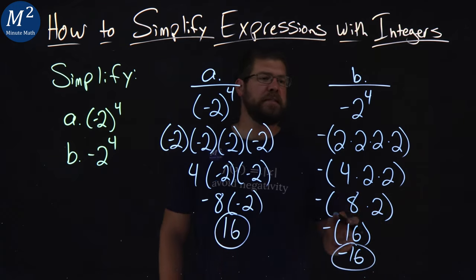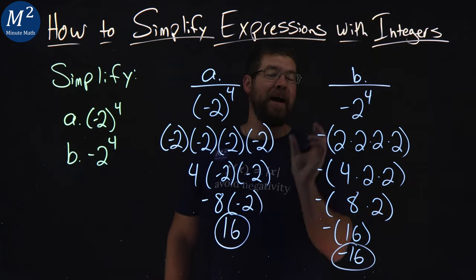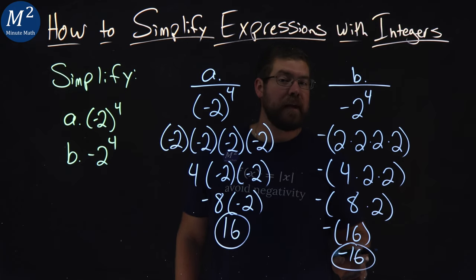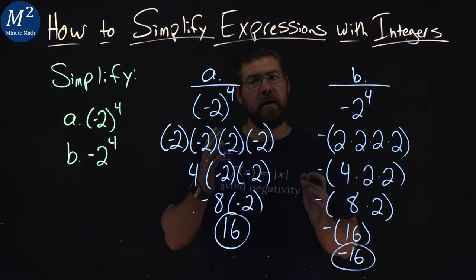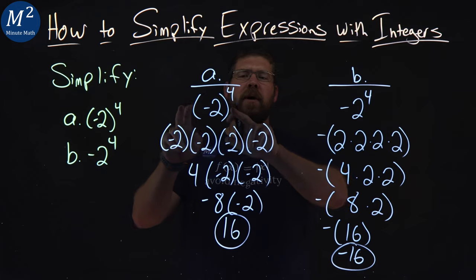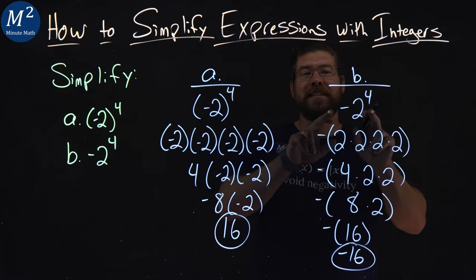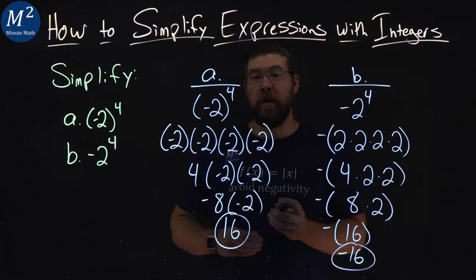And there we have it. We can see that negative two to the fourth power without the parentheses produces a negative 16. So when you're writing this down and trying to read it, that's why these parentheses are important to designate, especially when you're dealing with exponents.